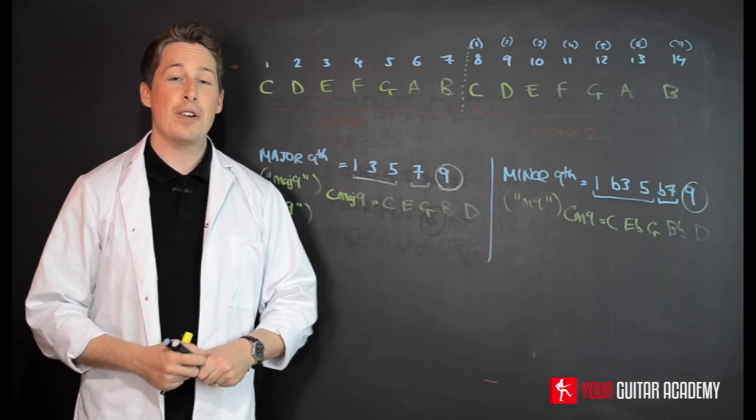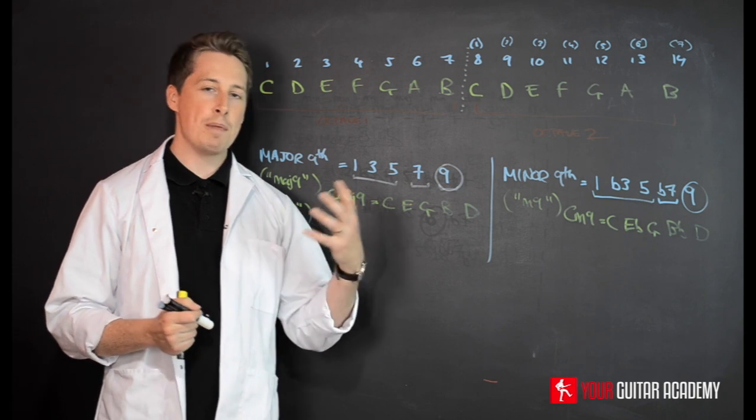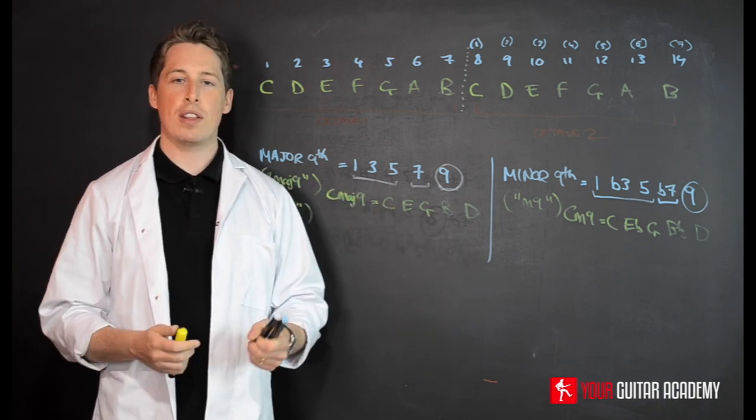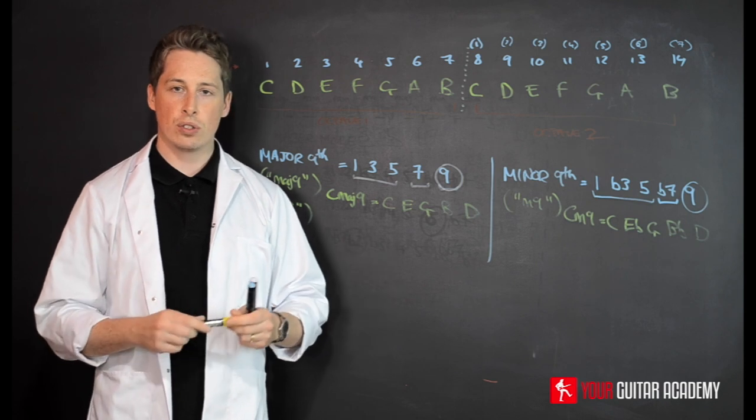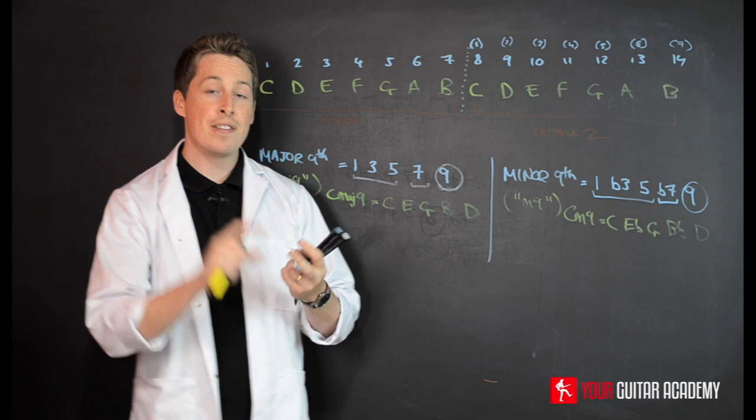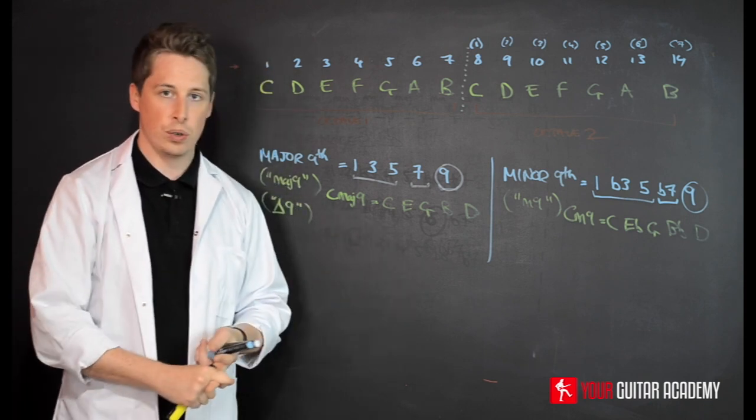Hi guys, welcome back, and we're now looking at dominant 9. So this is, if you remember when we did the 7th chords, if you've been through that section, then we talked about the fact that the 7th chord is constructed by taking the 1 3 5 and the flat 7. That gives you a dominant 7th chord.